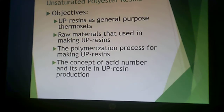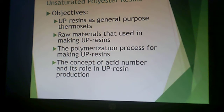The objectives of this lecture are to define unsaturated polyester resins as a general purpose thermoset. It is the other general purpose thermoset resin besides the phenolics and the urea formaldehyde resin. We're going to talk about the raw materials used in making unsaturated polyester resins, the different polymerization processes — there are actually two — and the concept of acid number and its role in unsaturated polyester resin production.